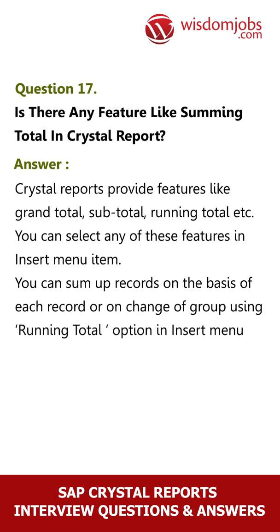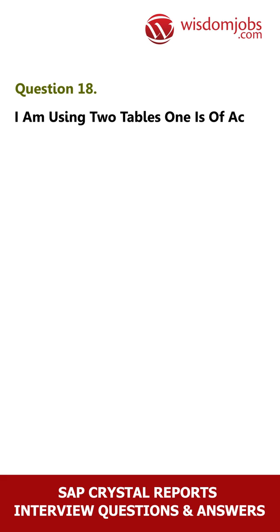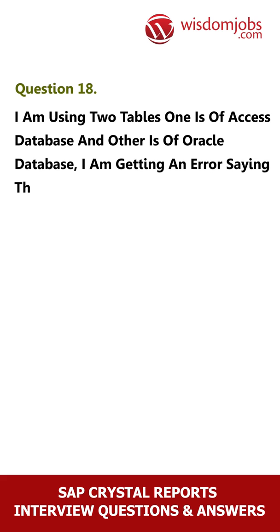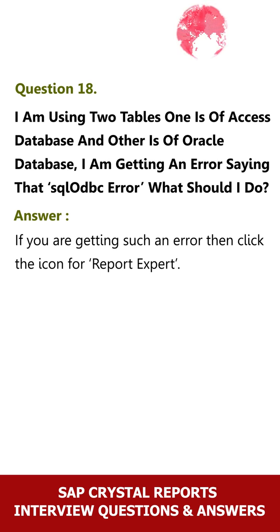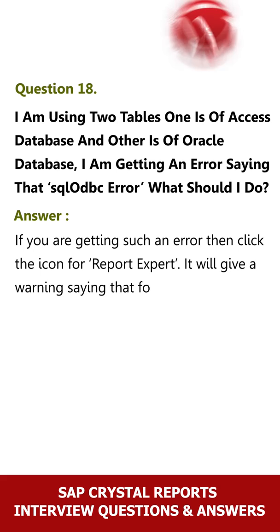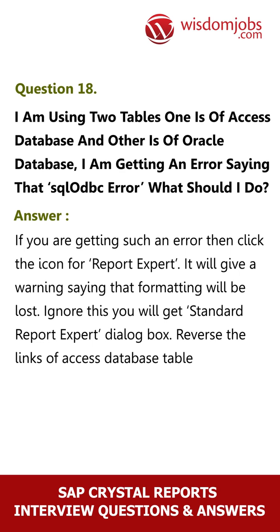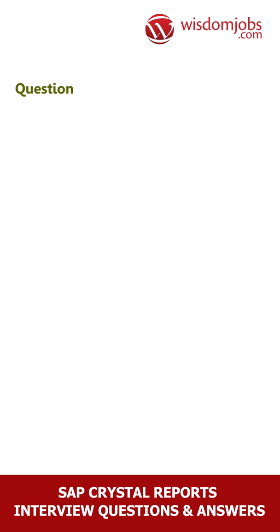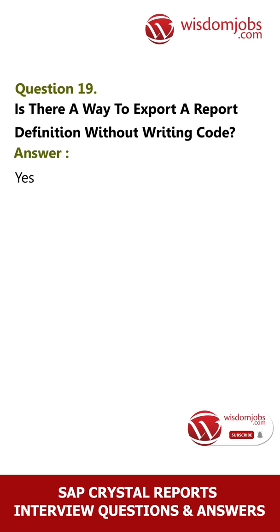Question 18: I am using two tables — one from an Access database and the other from an Oracle database — and I am getting an error saying SQL ODBC error. What should I do? Answer: If you are getting such an error, click the icon for Report Expert. It will give a warning saying that formatting will be lost — ignore this. You will get the standard Report Expert dialog box. Reverse the links of the Access database table and it will work.